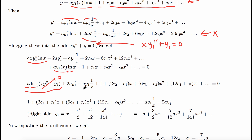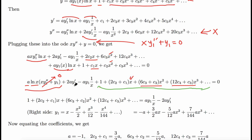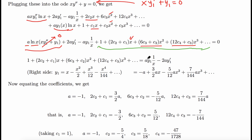After canceling the ln(x) term, the remaining equation involves 2a·y₁'/x terms and the polynomial coefficients. Factoring out powers of x, we can combine like terms: 2c₂ + c₁ multiplies x, the x² terms combine, x³ terms combine, and so forth. Moving the y₁-dependent terms to the right-hand side, we have y₁ = x - x²/2 + x³/12 - ···